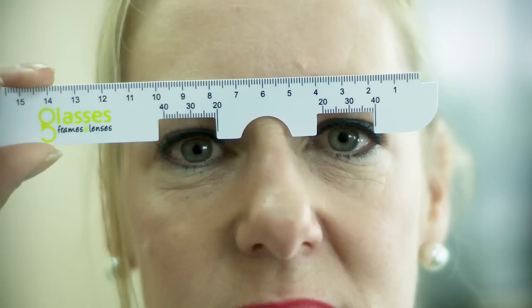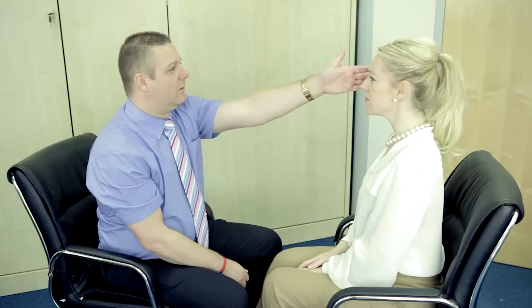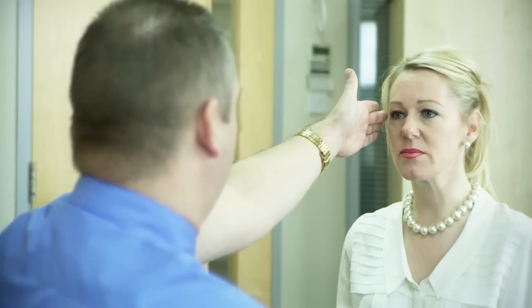The glasses frames and lenses PD ruler is designed to fit over the bridge of your nose with sections cut out for you to look through. With the help of another person, sit opposite each other about an arm's distance apart.